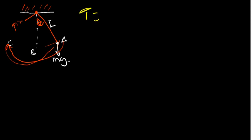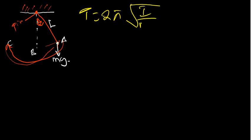For the physical pendulum, the period is given by 2 pi times the square root of the moment of inertia divided by M times G times L, where the moment of inertia is just basically ML squared. The M is the mass of the object which you have, G is the gravitational acceleration, and L is just basically the length of the object.